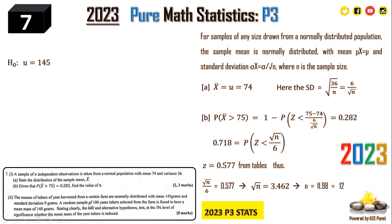Sub-2: The masses of tubers of yam harvested from a certain farm are normally distributed with a mean of 145 grams and standard deviation of 9 grams. A random sample of 100 yam tubers selected from the farm has a mean mass of 140 grams. We want to test at the 5% level whether the mean mass is reduced. This is similar to testing whether a product's stated mass is accurate — companies claim a mean mass but a sample may show a lower value.